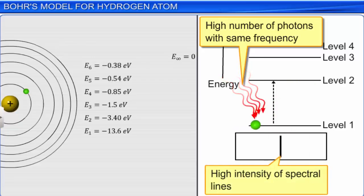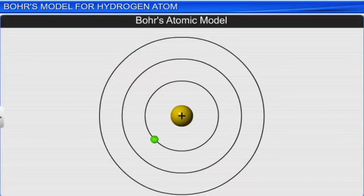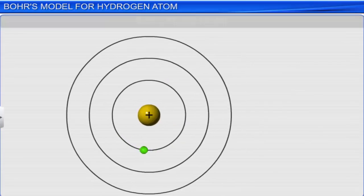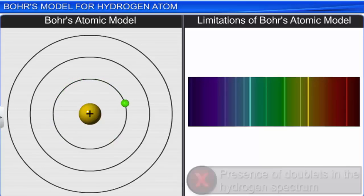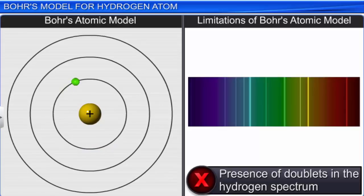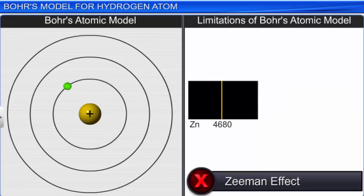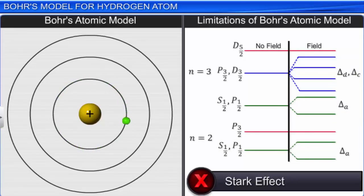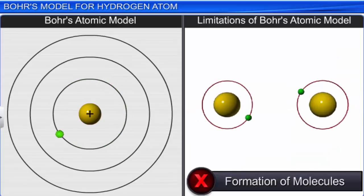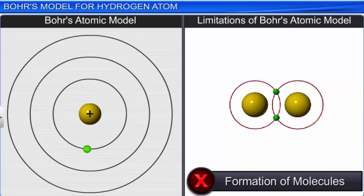Bohr's atomic model of hydrogen atom helps answer most questions prevalent at that time. However, it could not explain the line spectrum of multi-electron atoms, the presence of doublets in the hydrogen spectrum when observed through sophisticated spectroscopes, the splitting of spectral lines in the presence of magnetic field (the Zeeman effect), the splitting of spectral lines in the presence of electric field (the Stark effect), the ability of atoms to form molecules through chemical bonding, and the dual nature of electrons as both wave and particle.